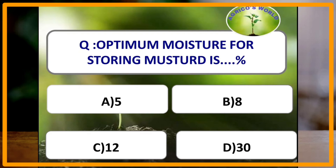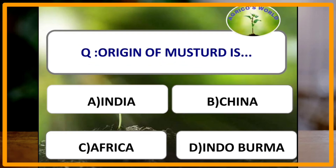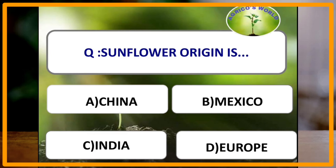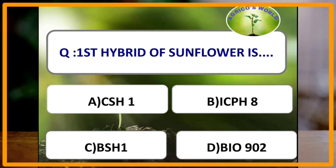Optimum moisture percentage for storing mustard is 8% and for cereals it is 12%. Origin of mustard is China and that of rapeseed is Afghanistan. Origin of sunflower is Mexico or USA. First hybrid of sunflower is BSH-1, which was released from the company Proagro.